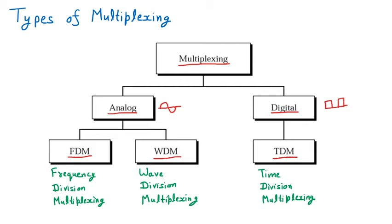For example, three students with roll numbers one, two, and three: roll number one gets the first minute, roll number two gets the second minute, roll number three gets the third minute, and then the fourth minute goes back to roll number one. This is Time Division Multiplexing.